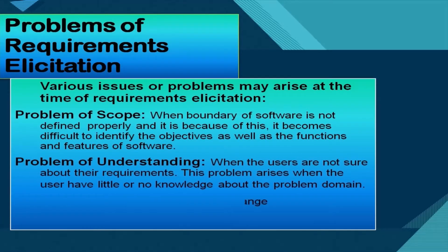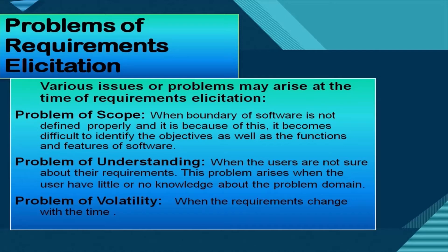Various issues or problems may arise at the time of requirement elicitation. First is the problem of scope, when the boundary of the software is not defined properly, making it difficult to identify the objectives as well as the functions and features of the software. Second is the problem of understanding, when the users are not sure about the requirements or have little knowledge about the problem domain. Third is the problem of volatility, when the requirements of the client or customer change with time.